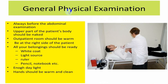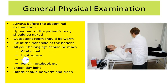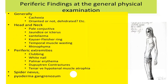In abdominal examination, a good general examination related to abdominal viscera — liver, kidney, gallbladder — should be done properly. Before abdominal examination, the upper part of the patient's body should be examined with clothes removed. The outpatient room should be warm. Inspection, palpation, percussion, and auscultation should be done by standing on the right side of the patient. Always wear a white coat, ensure adequate daylight, measurements, pencil, and a notebook to mention findings. The room should be warm and clean.